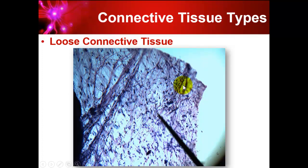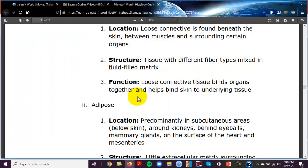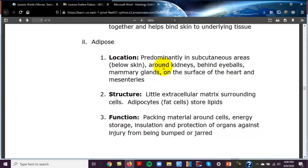In the lab slide, you can see the cells are spread out — not right next to each other like epithelial cells. The large thick fibers are collagenous fibers. It's not a super strong tissue but does provide some strength. Adipose tissue looks like chicken wire.